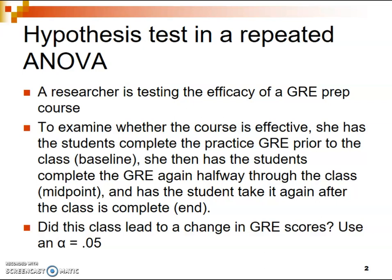Some things to notice about the question: we have the same group of students completing the practice GRE at three different time points — baseline, midpoint, and end. This is a within-subjects design, also known as a repeated measures design. Since there are three different time points, the appropriate analysis is a repeated measures ANOVA or within-subjects ANOVA.